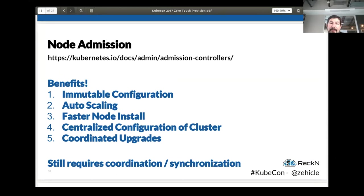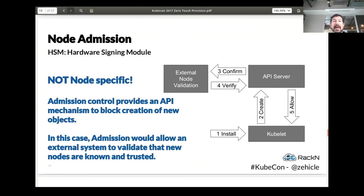Node admission basically means nodes show up into a cluster, ask to join, and automatically join. In a case like that you could see immutably bringing up a new node and having it magically join the cluster. A new machine comes in, creates a kubelet, registers with the API server, the API server delegates to an external system to confirm whether it's a valid node, and then the node is added as an object type in Kubernetes — establishing the relationship between API and kubelet. That allows you to not have random nodes show up and take on work, which would be bad.